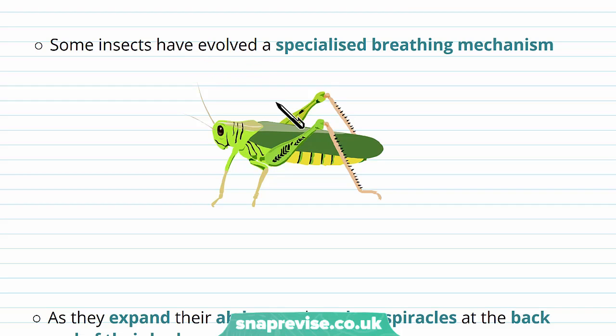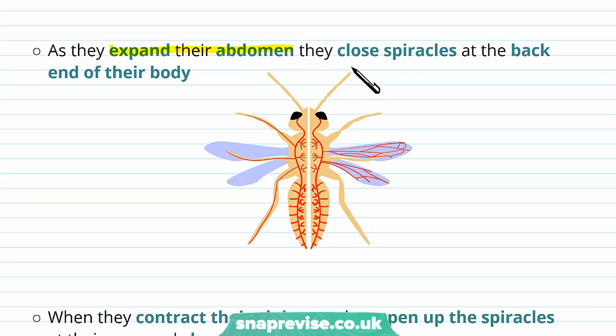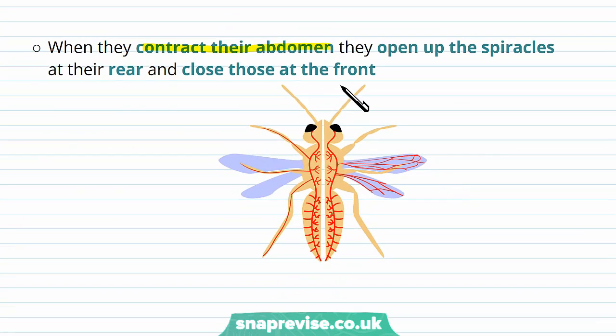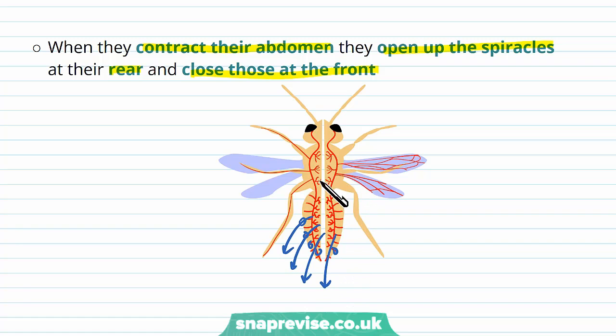Some insects have a more specialized breathing mechanism, particularly larger insects like grasshoppers. First, the abdomen expands, which closes the spiracles at the back of the body while opening those at the front, drawing air in. Then when the abdomen contracts, the spiracles at the rear open and those at the front close, allowing CO2-filled air to exit through the rear spiracles. This alternating opening and closing of front and rear spiracles drives oxygen in and carbon dioxide out, and is a specialized breathing mechanism found in some larger insects.